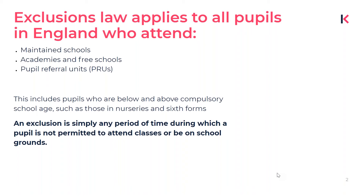Only 7% of permanently excluded children and 18% of children who received multiple fixed-term exclusions went on to achieve good passes in their GCSEs. Over a third of pupils who finish education in alternative provision — which is what happens after you've been permanently excluded — were considered to be NEET, which means not in education, employment, or training.